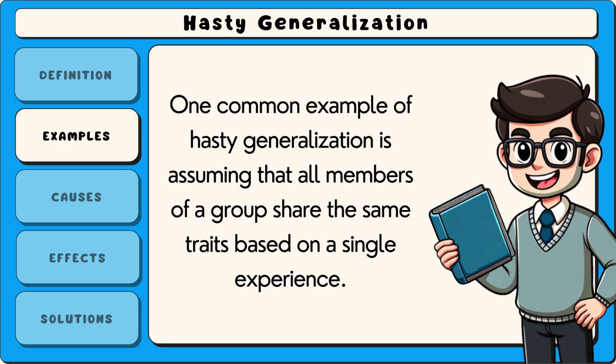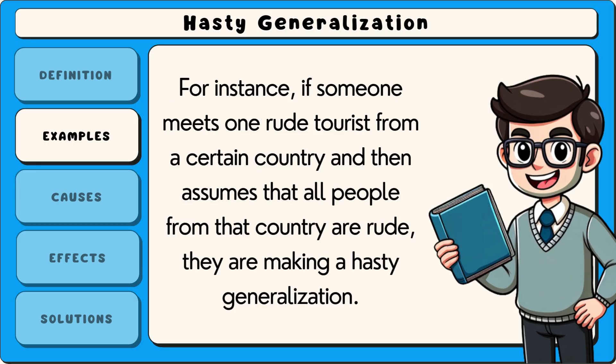One common example of hasty generalization is assuming that all members of a group share the same traits based on a single experience. For instance, if someone meets one rude tourist from a certain country and then assumes that all people from that country are rude, they are making a hasty generalization.